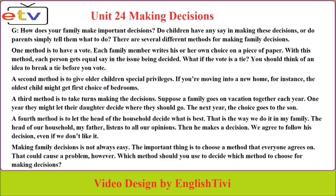A second method is to give older children special privileges. If you're moving into a new home, for instance, the oldest child might get first choice of bedrooms. A third method is to take turns making the decisions. Suppose a family goes on vacation together each year. One year, they might let their daughter decide where they should go.